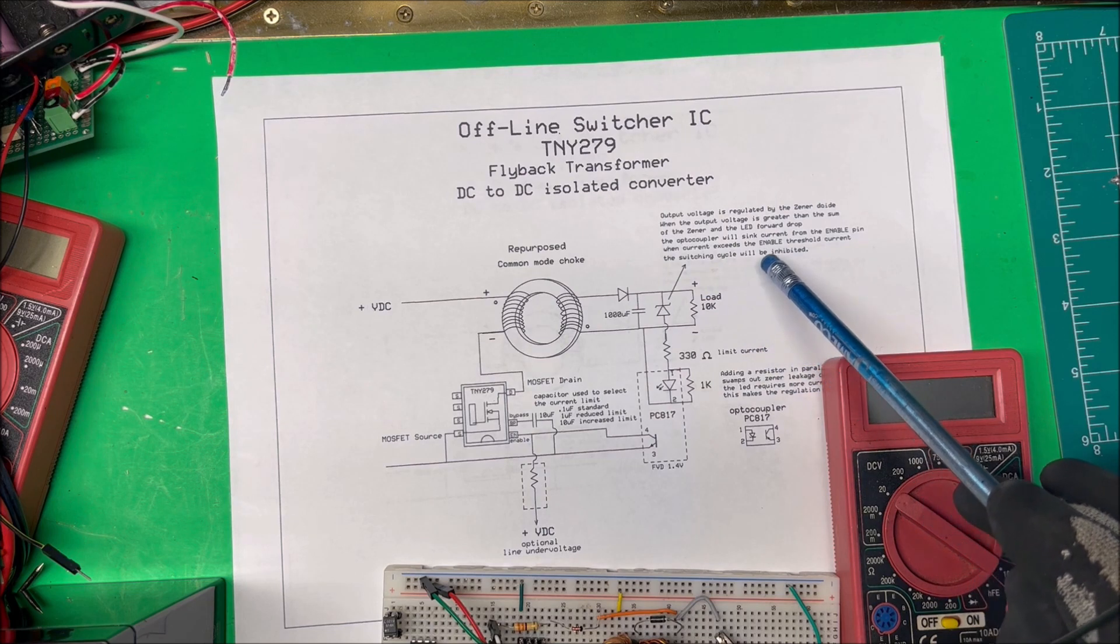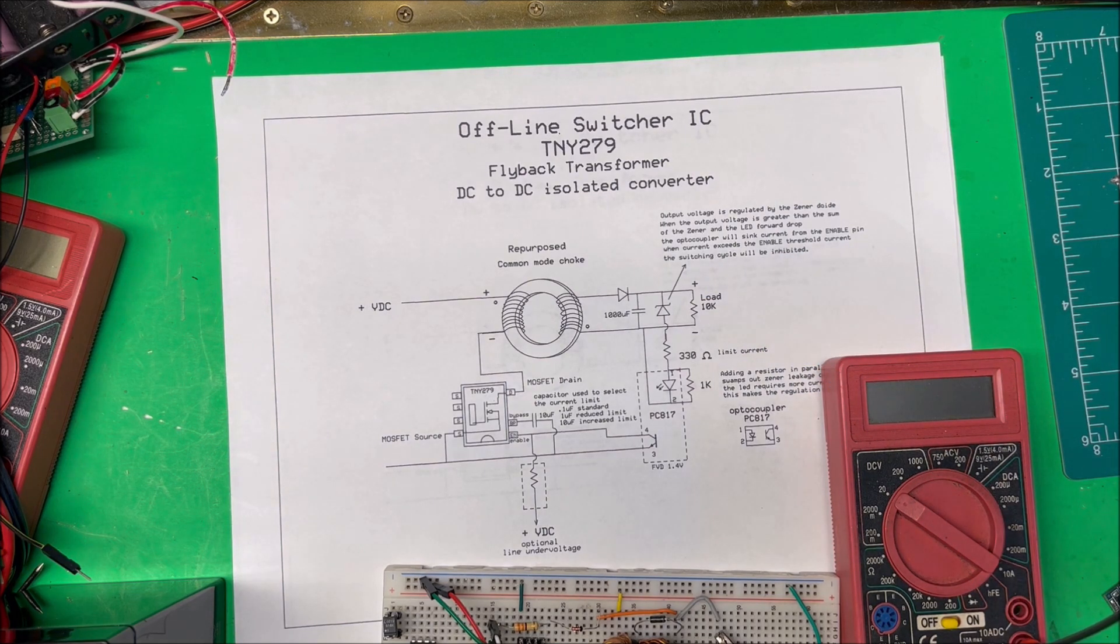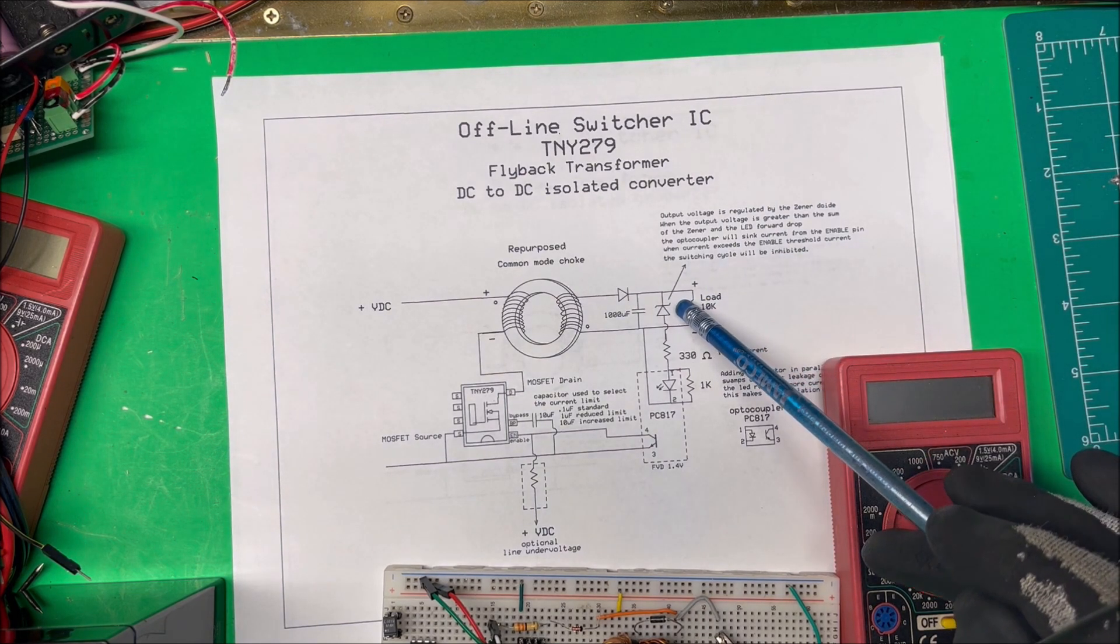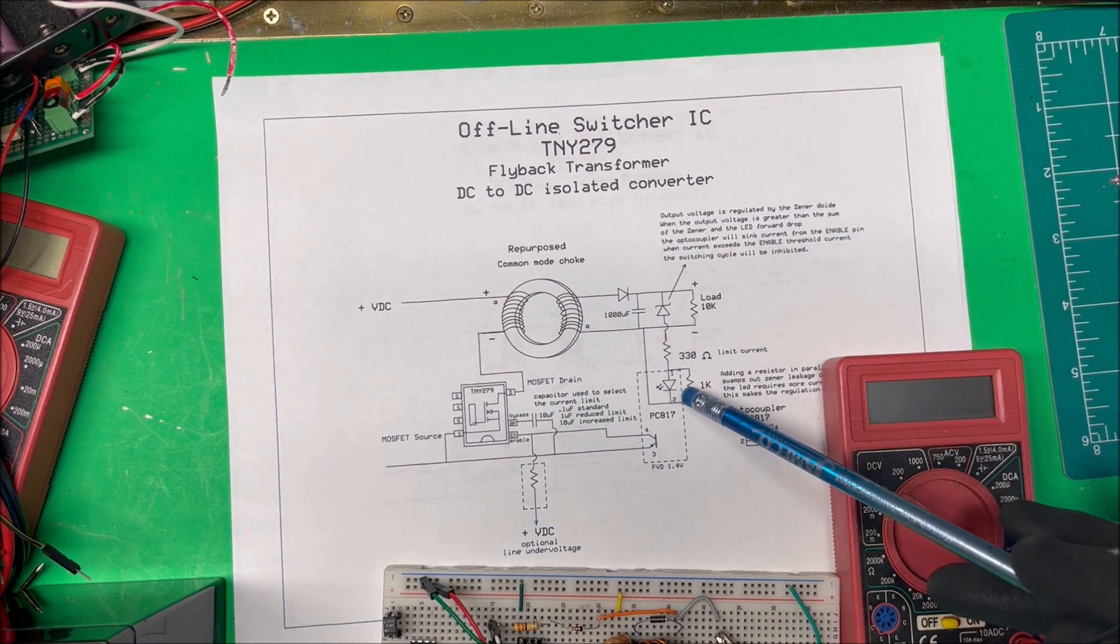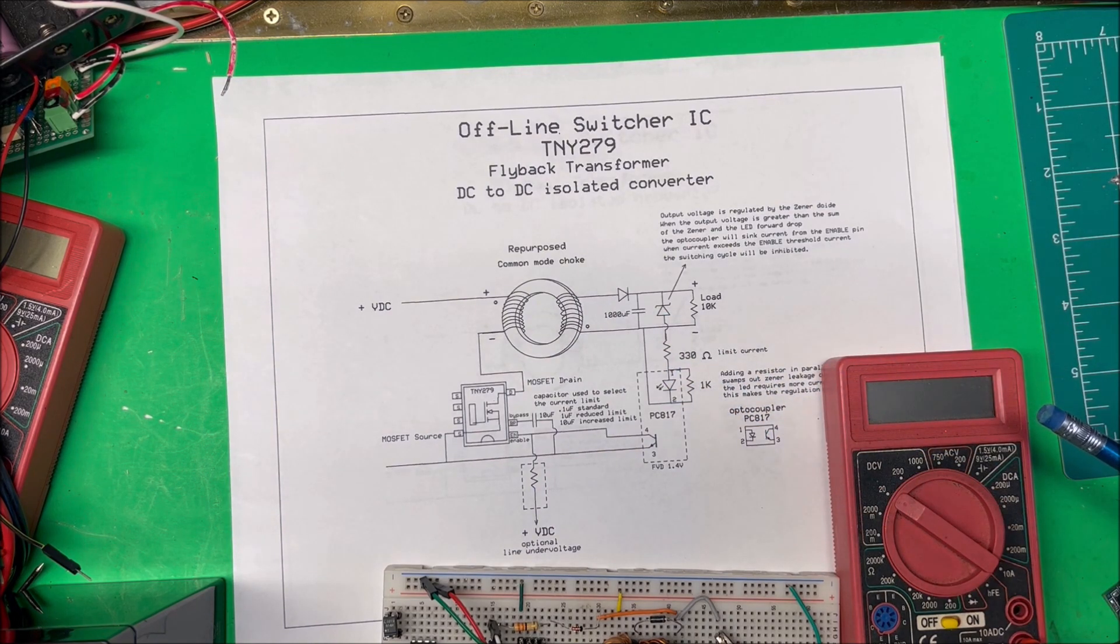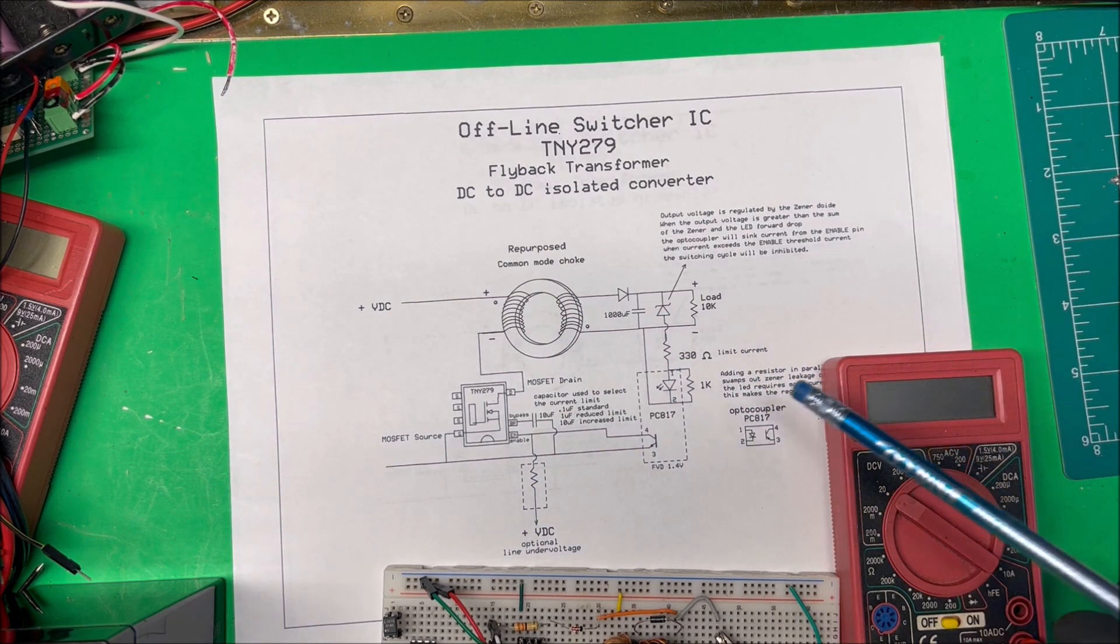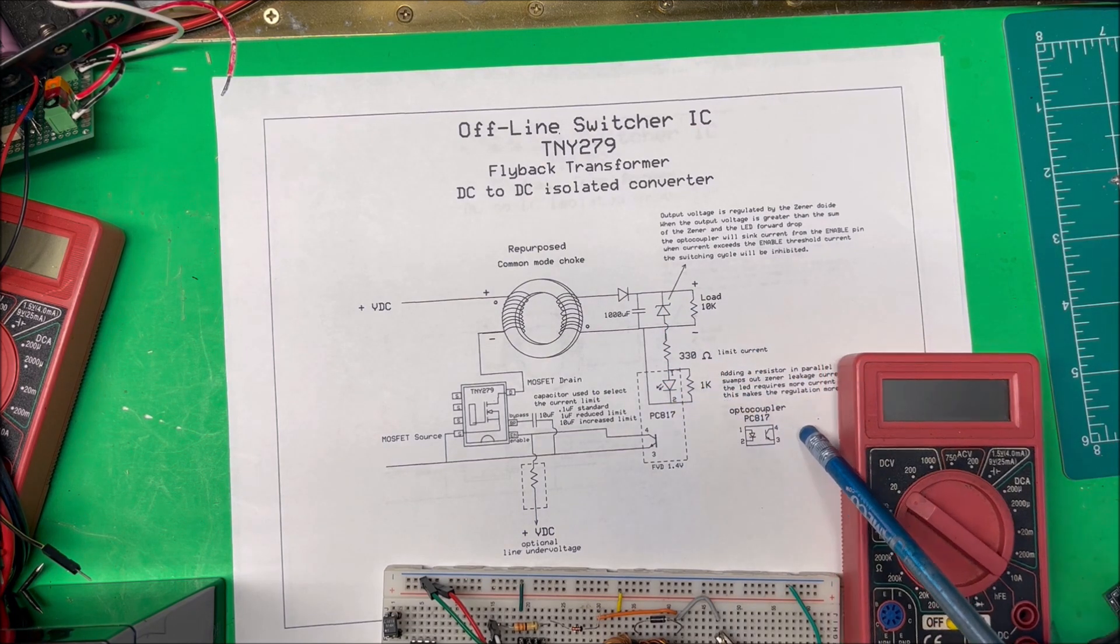...of the zener diode plus the voltage drop across this LED. That's what's controlling it. Now we added a 1K resistor across here. On these zener diodes, they have some leakage current.